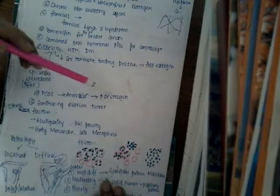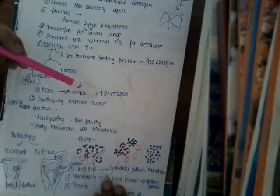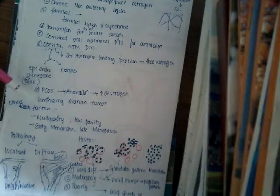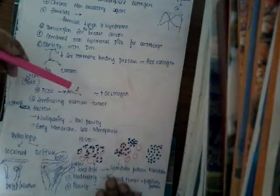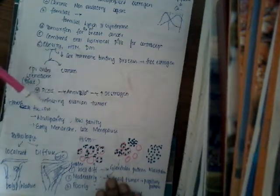In polycystic ovarian disease there are many anovulatory cycles, resulting in increased estrogen. Feminizing ovarian tumors are hormone-producing ovarian tumors that produce estrogen, so because they produce estrogen there is increased estrogen in the body.